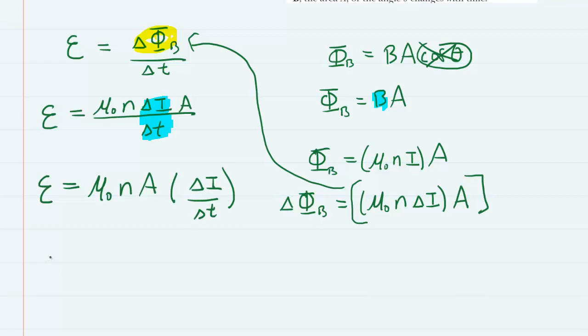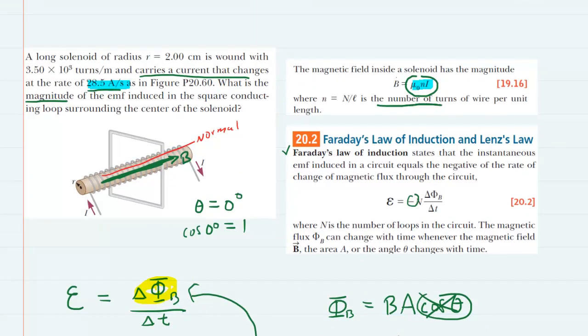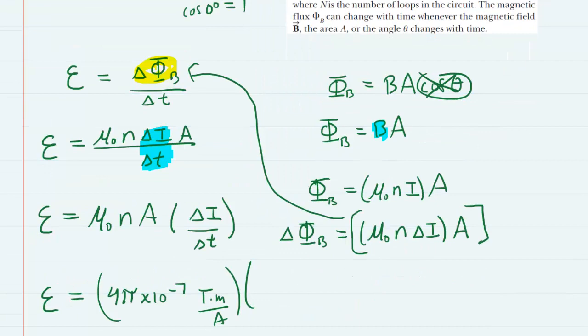So now we are ready to plug in the known values. This μ₀ is a constant. It's equal to 4π times 10 to the minus 7 with a unit of tesla meter per amp. Lowercase n, recall, is the number of turns of wire per unit length. Well, the question says that there are 3.5 times 10 to the third turns per meter. So that is your lowercase n. It's the 3.5 times 10 to the third.